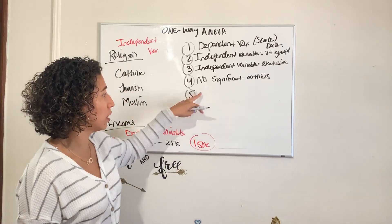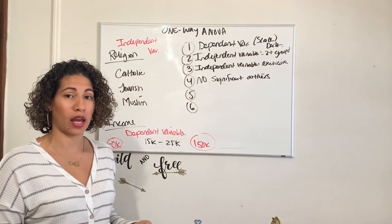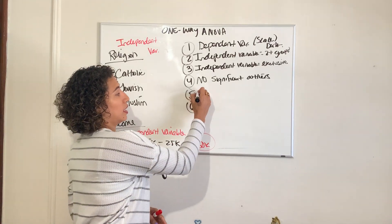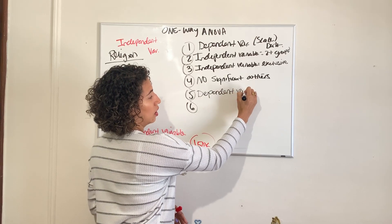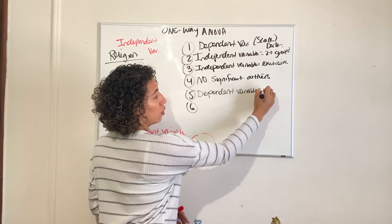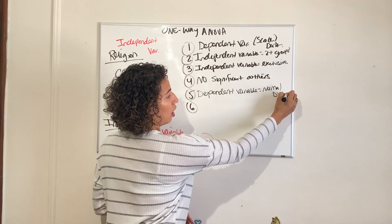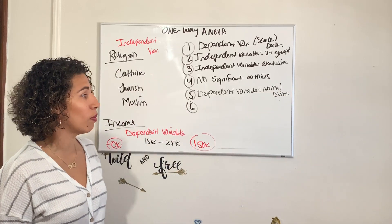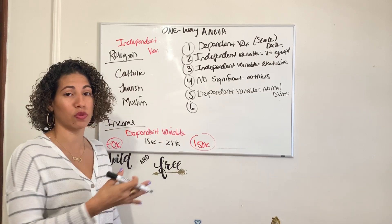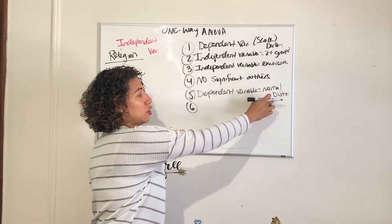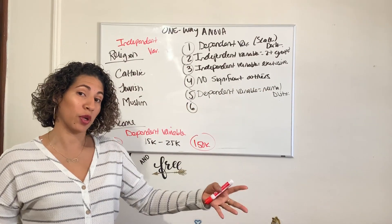The fifth assumption has to do with the idea that the dependent variable, which means income for us, should equal the normal distribution. That normal bell curve holds really important for almost all of the ratios that you do. It should be a normal distribution in our dependent variable. When we actually plot all these numbers, it should give us that beautiful bell curve.